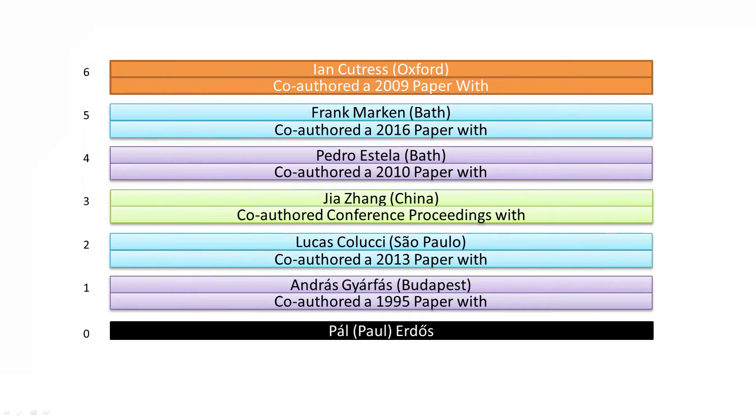Calculating back from Erdos: Gyárfás → Colucci → Zhang → Estrella → Marken → me. I have an Erdos number of six. The best way to get a lower Erdos number is to go into mathematics.